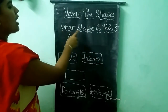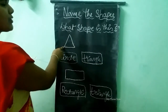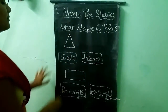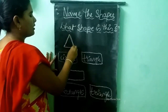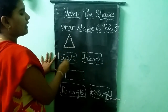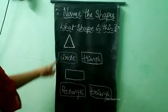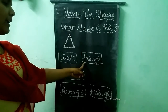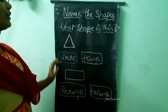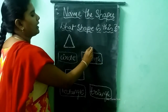What shape is this, children? Circle or triangle? Tell me, what shape is this? Triangle. So we need to tick triangle.